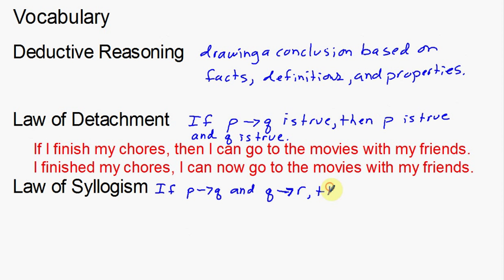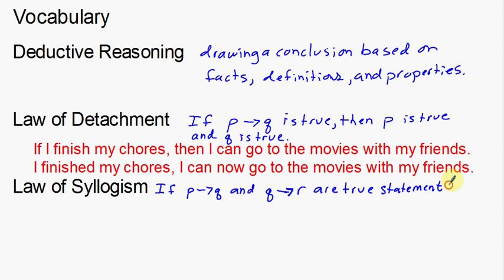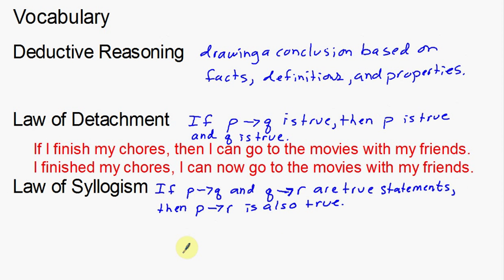One thing that I forgot is that we're talking about how true these statements are — if parts of these statements are true or false. So if P then Q, and Q then R, are true statements, then if P, then R is also true. So if I have two conditional statements where the conclusion of my first and the hypothesis of my second are the same thing, and if they're both true statements, then I can say if P, then R is also a true statement. Now this is kind of confusing since we're just using definitions and notation here, so let's see an actual example of this.